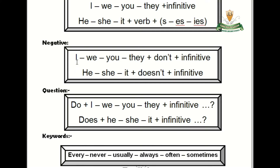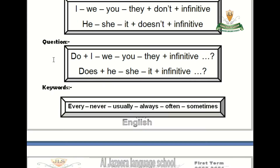The negative form: I, we, you, they come with don't plus an infinitive, and he, she, it comes with doesn't plus an infinitive. We can also make a negative with never, but we put the verb as it is. For example: I don't sleep early, or I never sleep early. She doesn't sleep early, or she never sleeps early.